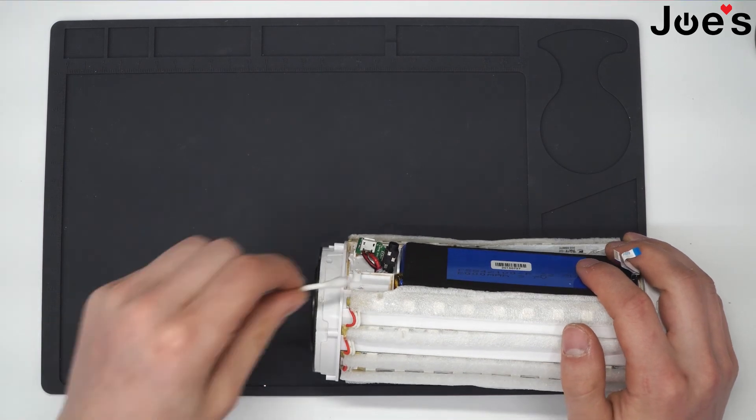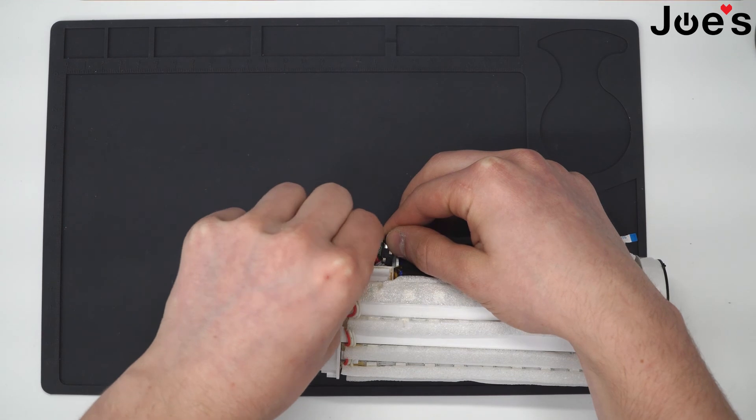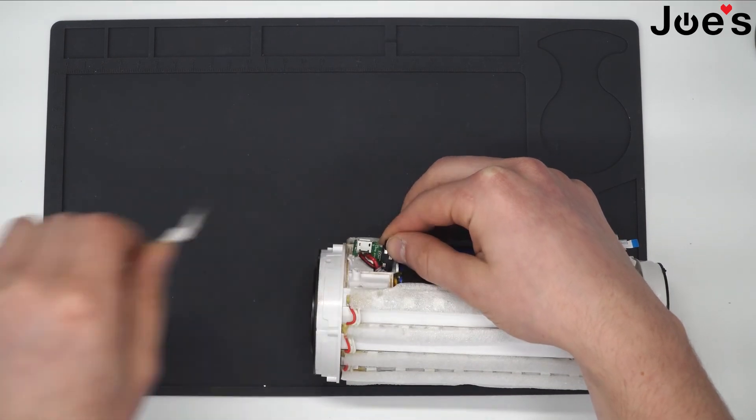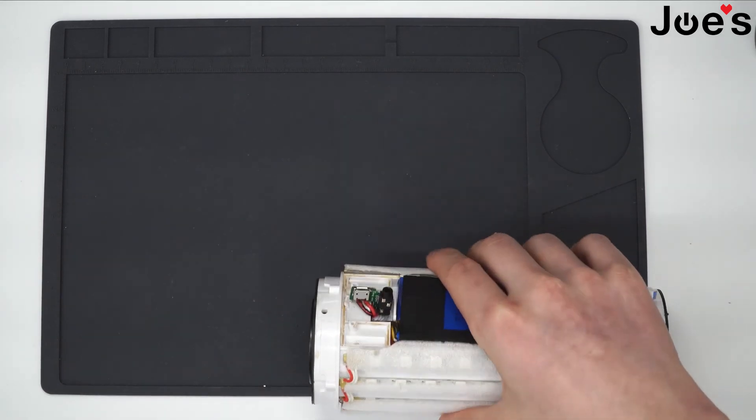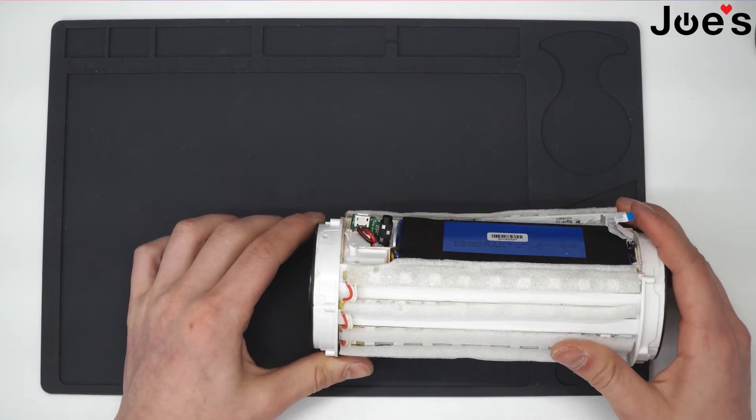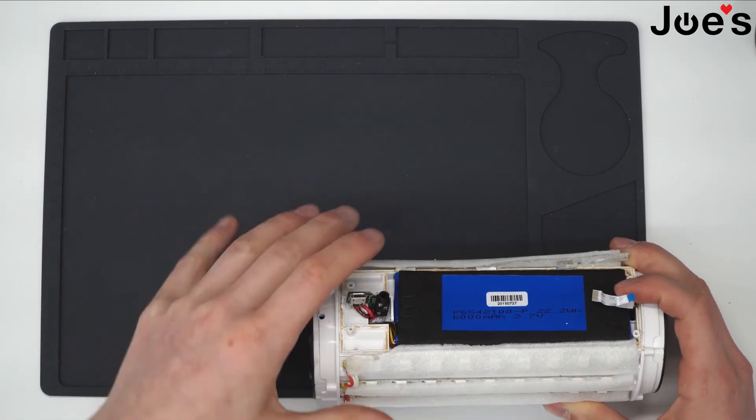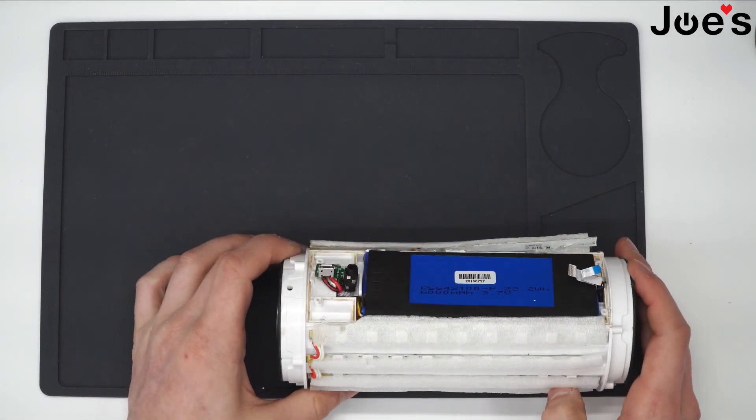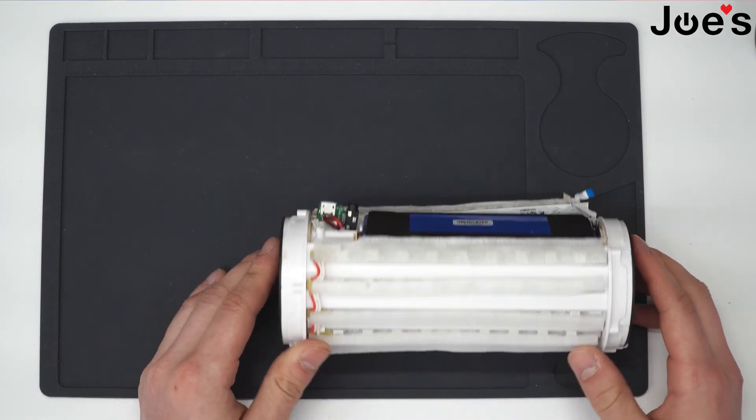Before we're done, let's clean up around here with alcohol and a Q-tip again. There we go - the port is installed and the job is done. It just needs to be secured back into place. That's the charge port replacement for a JBL Pulse 2 speaker.